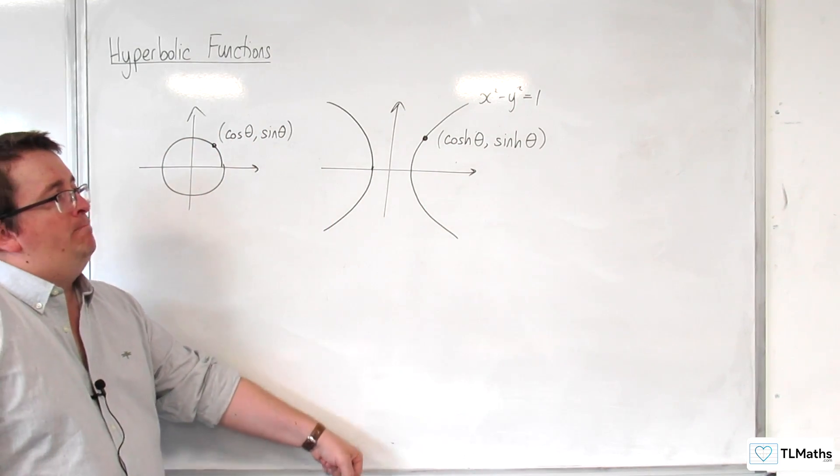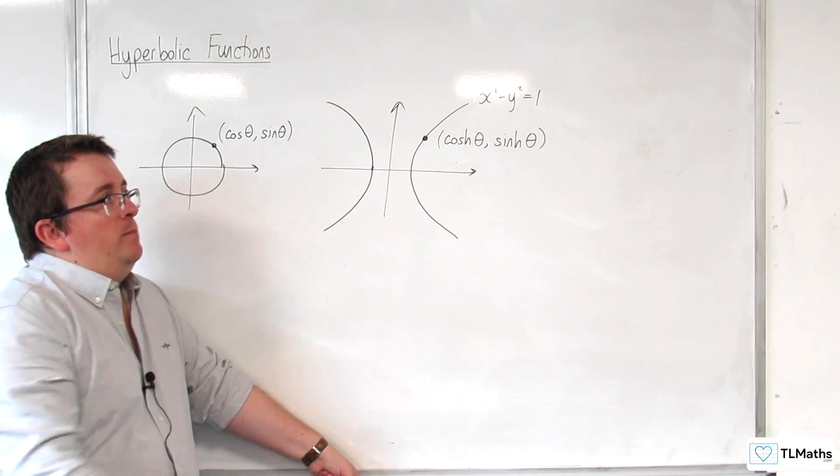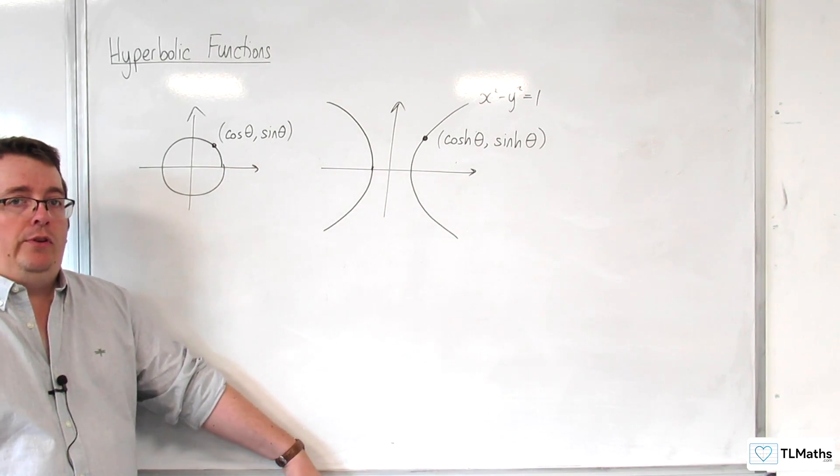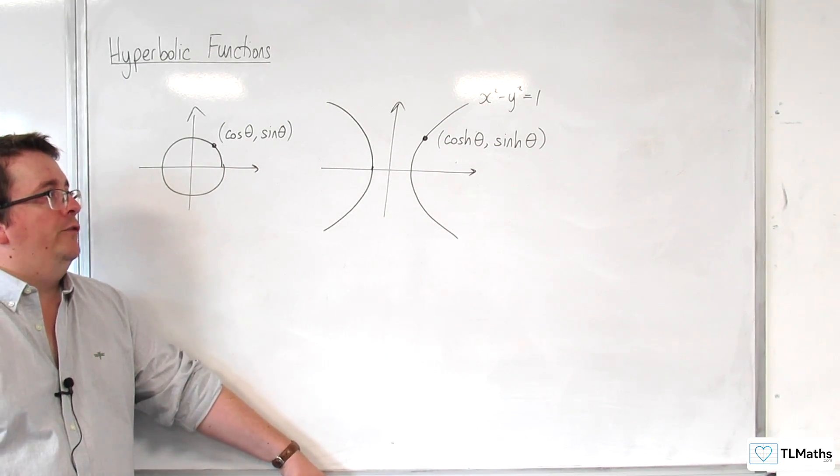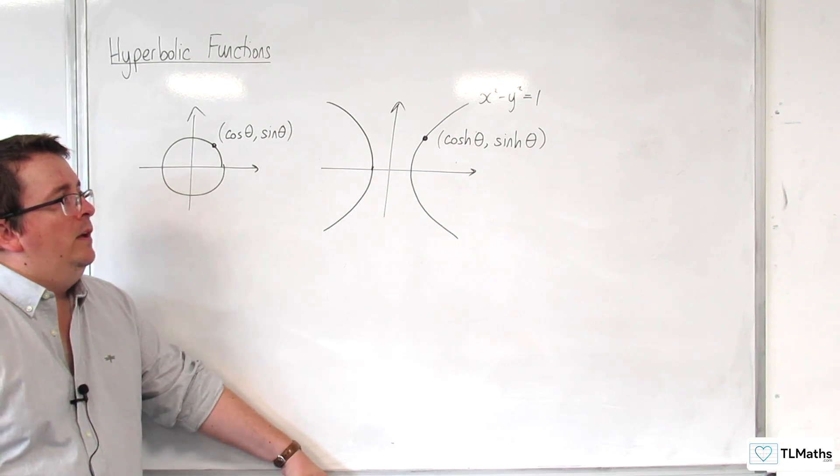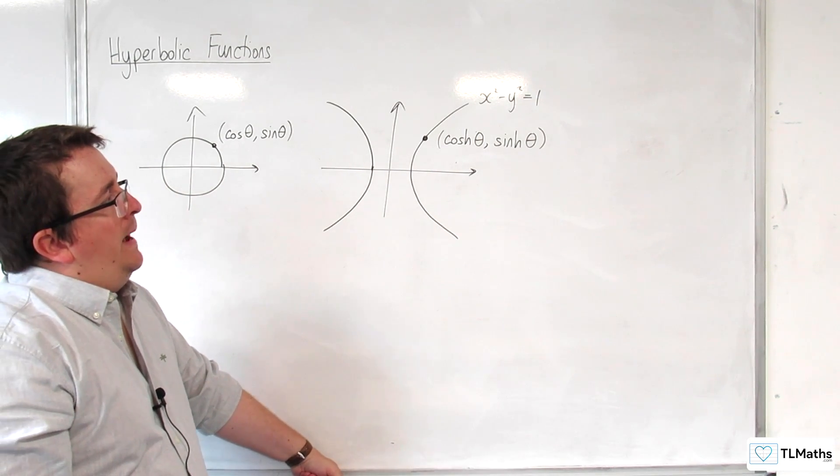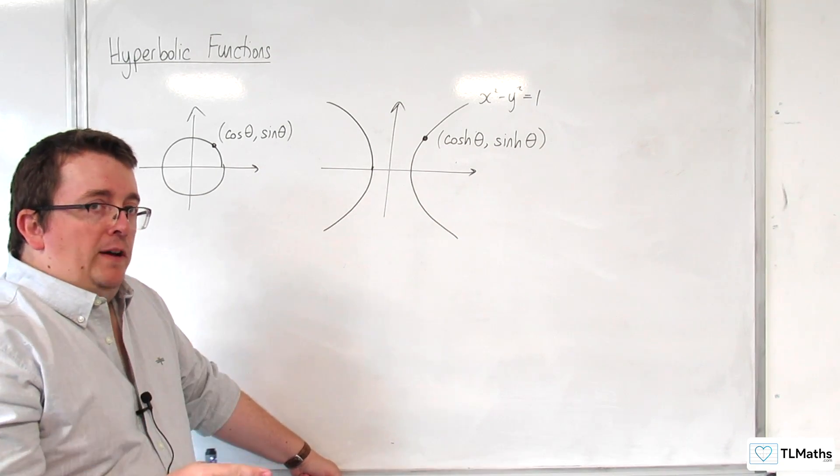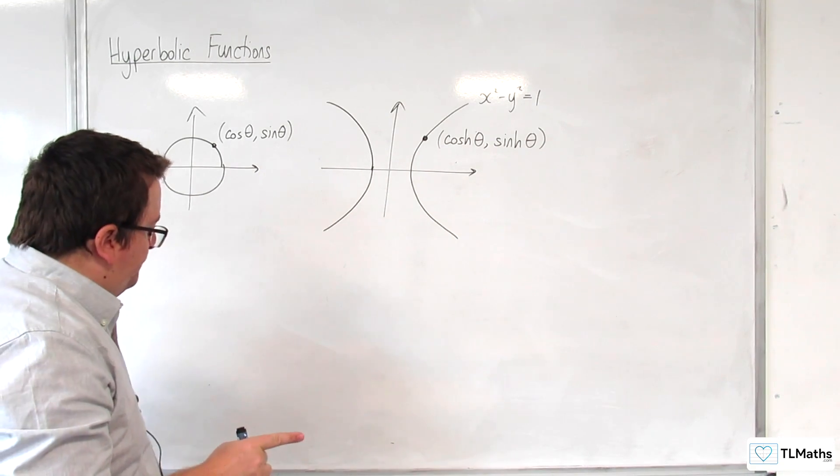Now, you can type that into Desmos, if you like. Put it in brackets like that, and you can see that it traces out that half of the graph. So, let's define them first.